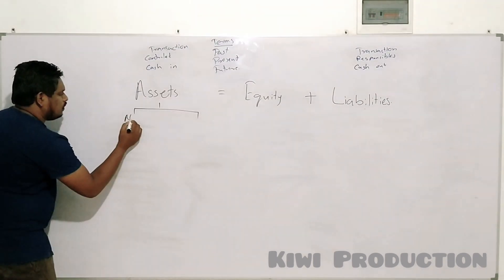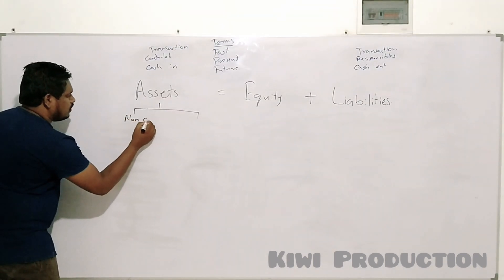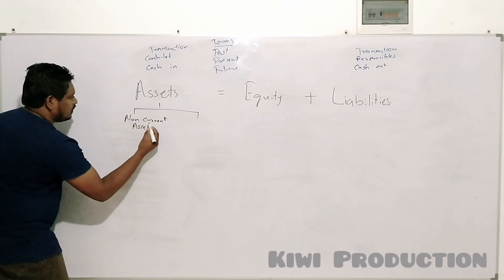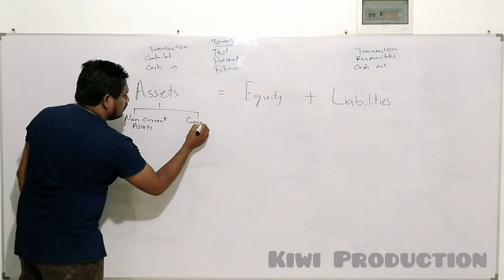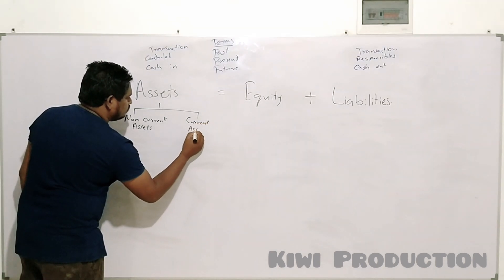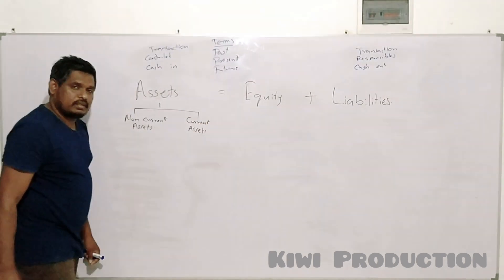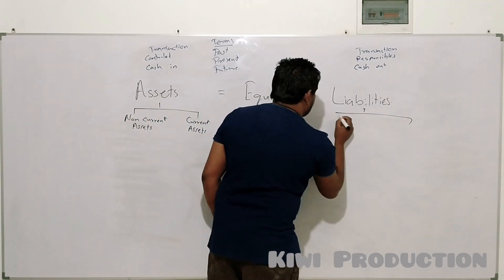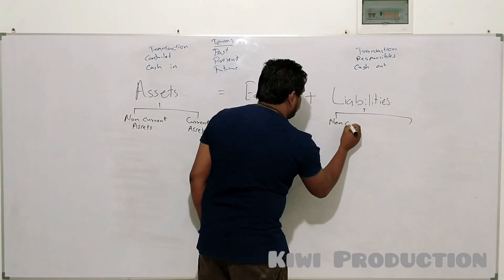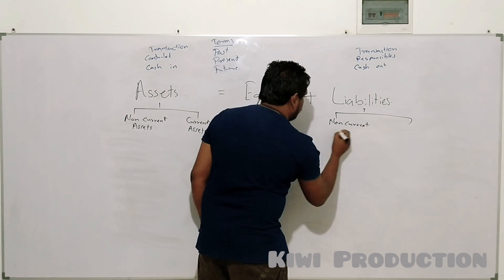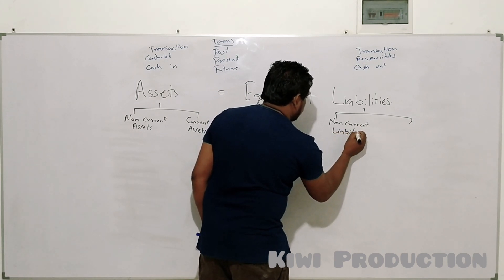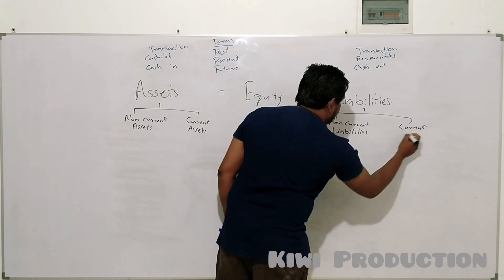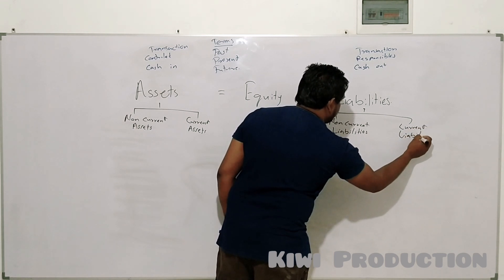Assets are of two types: non-current assets and current assets. In the same way, liabilities also divide into two categories: non-current liabilities and current liabilities.